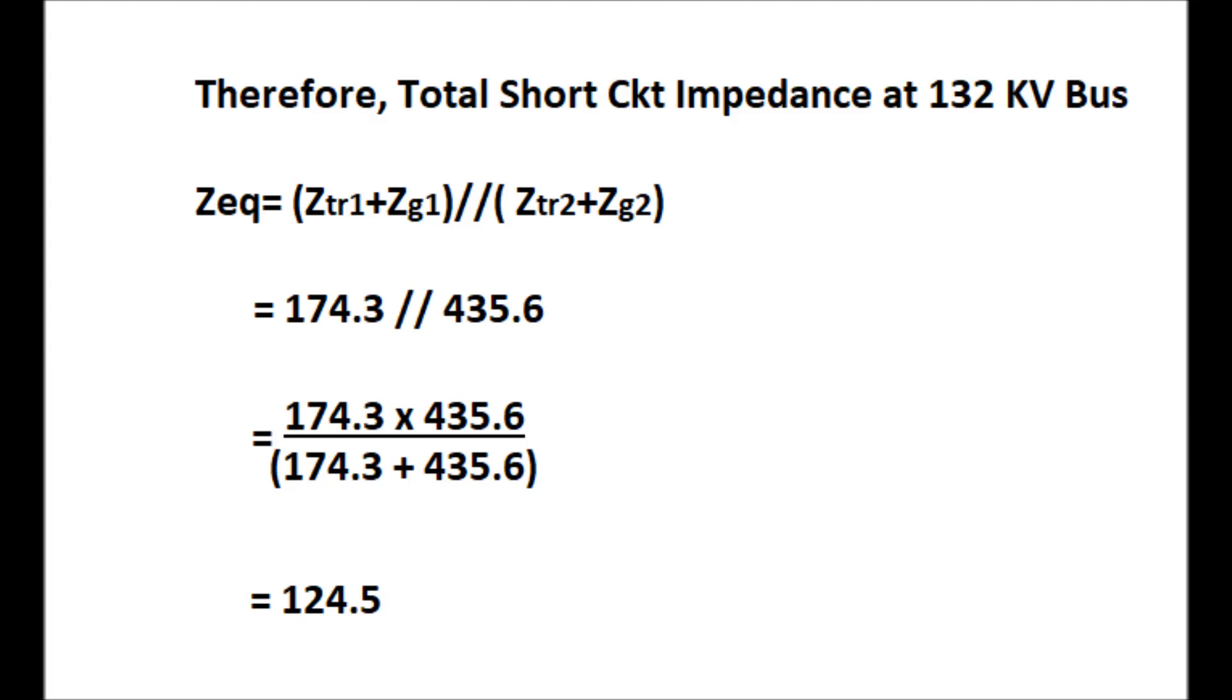Therefore, the total short circuit impedance at 132 kV bus will be Z equivalent equal to ZTR1 plus ZG1 in parallel with ZTR2 plus ZG2. This parallel equivalent impedance will come to 124.5 ohm.